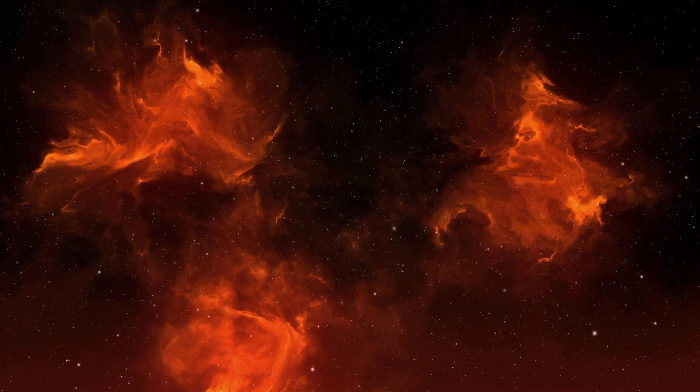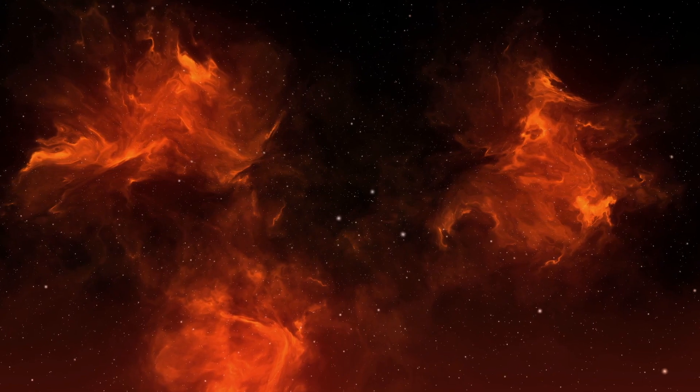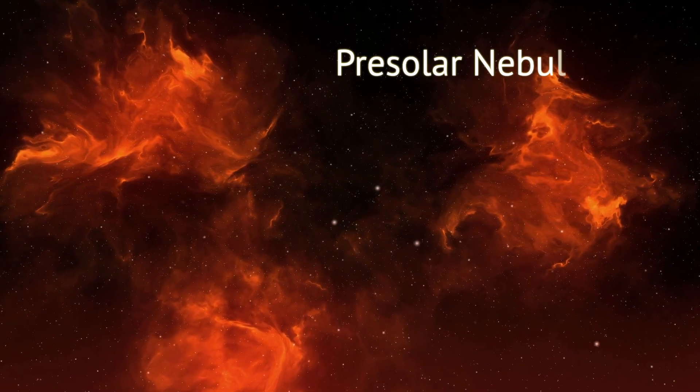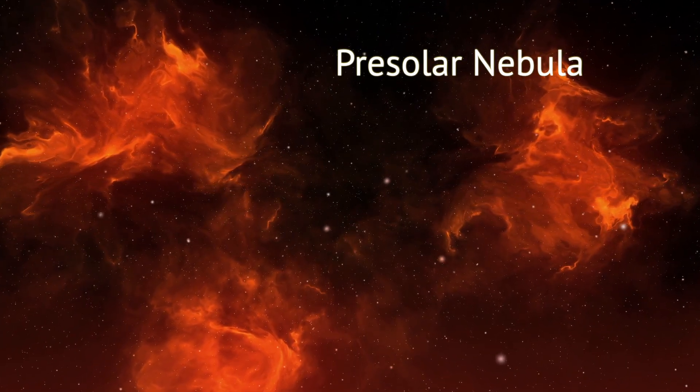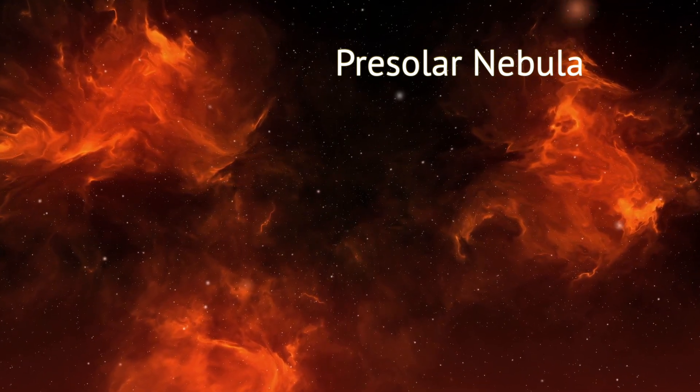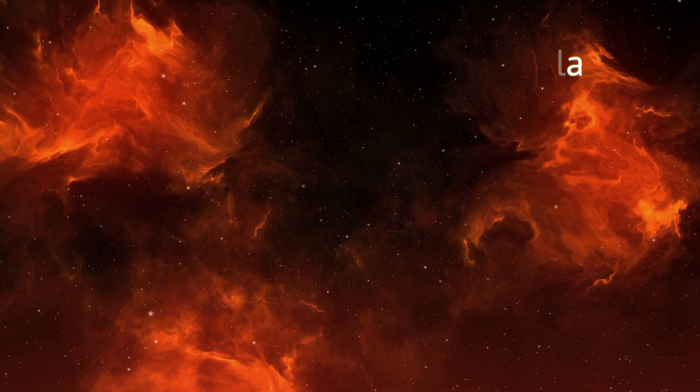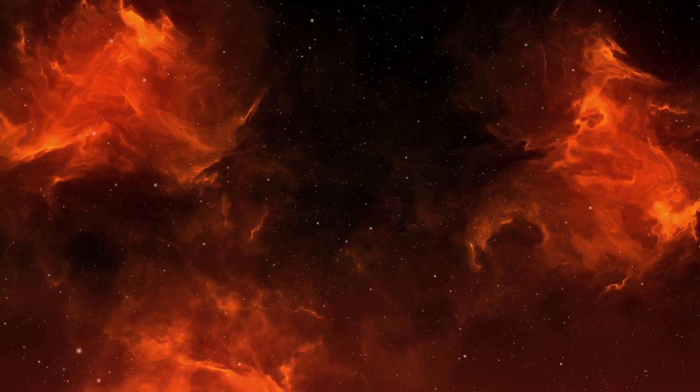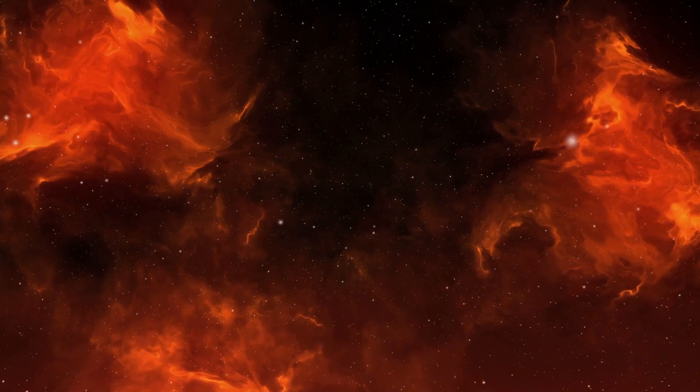This was our solar system four and a half billion years ago. Everything we know, everything we have touched, started out as nothing more than gas and dust floating in the void. At first there were no planets or moons, not even a Sun.